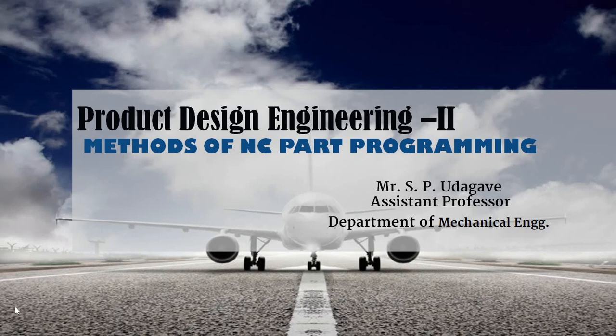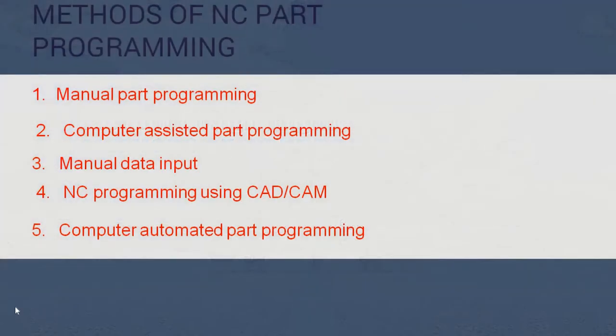Hello viewers, today we are going to learn the methods of NC part programming in product design and engineering. I am S.P. Udgaway, assistant professor, Department of Mechanical Engineering, SIT COE. There are five different types of NC part programming: first, manual part programming; second, computer assisted part programming; third, manual data input; fourth, numerical control programming using CAD/CAM; and fifth, computer automated part programming.